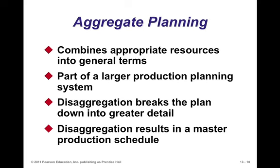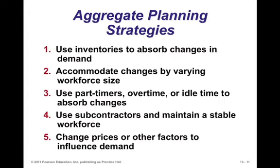What are some strategies? We're trying to balance between capacity and demand. One strategy is to use inventories to absorb changes in demand — keep a level production rate, stock up inventory in periods of low demand, and use that inventory to satisfy demand when it exceeds the average production level. When you have idle capacity, you use it to create stock, and then use that for periods where demand exceeds your capacity.